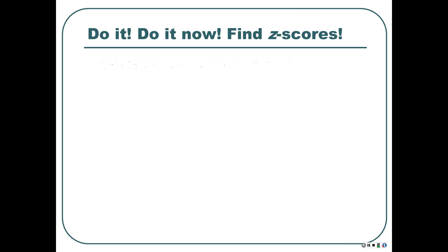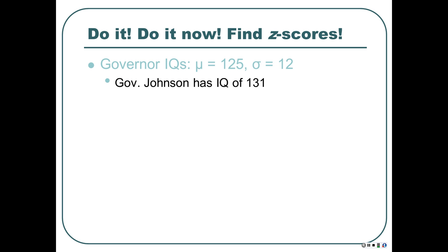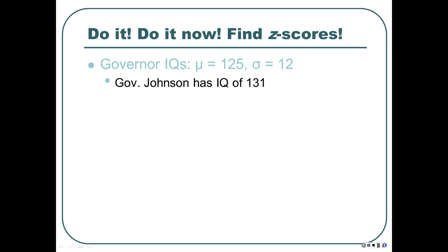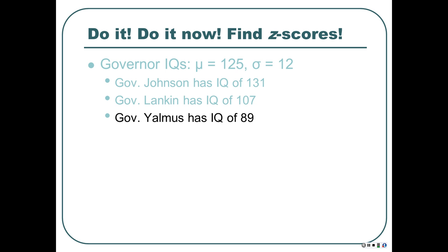Let's find some z-scores. Say there are all 50 U.S. governors, and the mean IQ is 125 — we use mu because we have all the governors, making it a population. The standard deviation sigma is 12. Governor Johnson has an IQ of 131, Governor Lincoln has 107, and Governor Yalmas has 89. Let's find the z-scores for all of those.